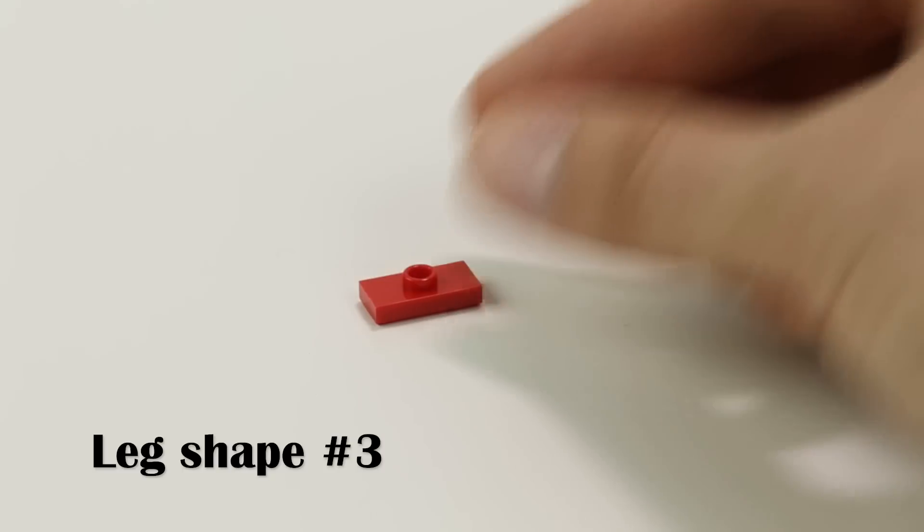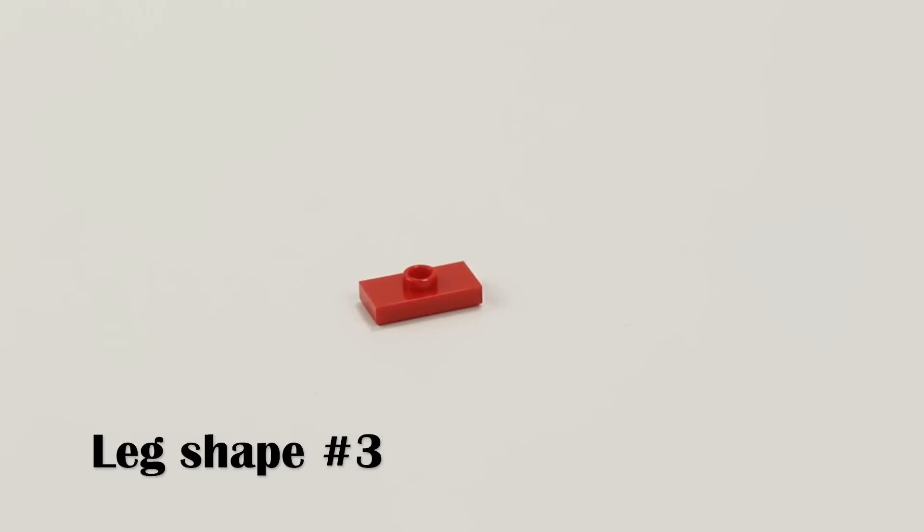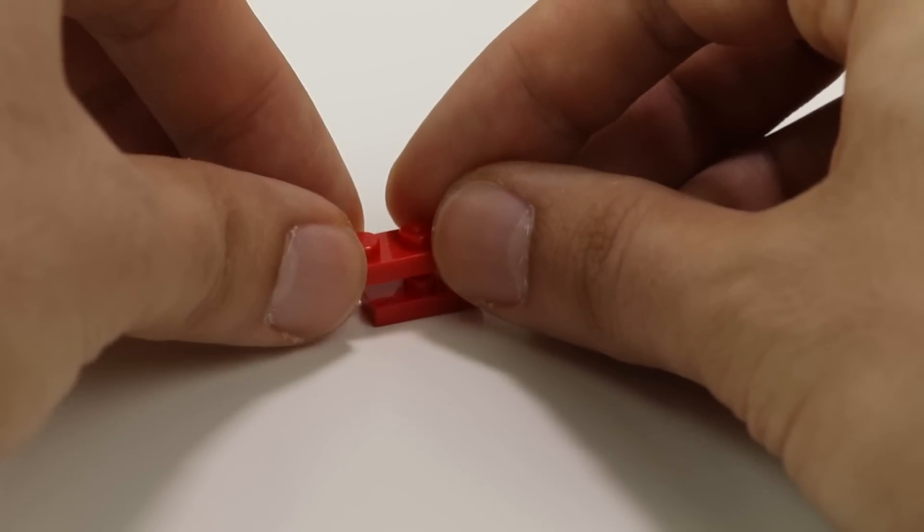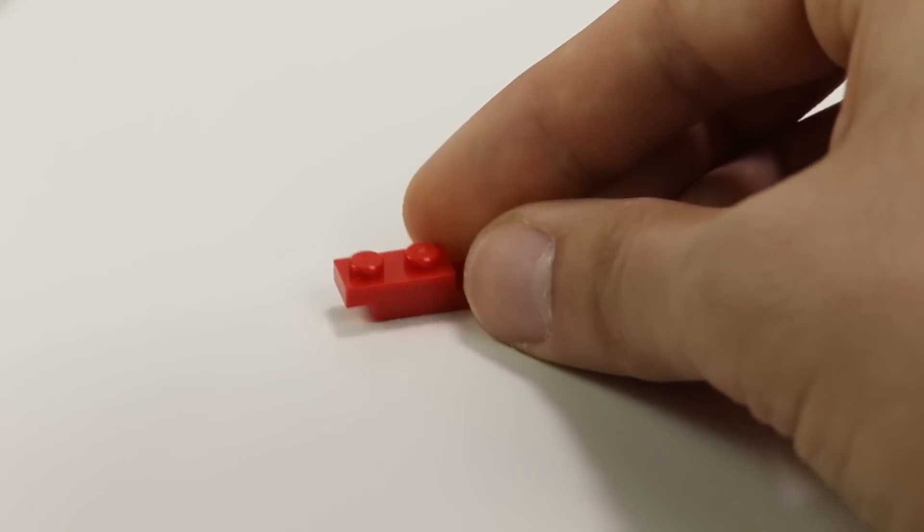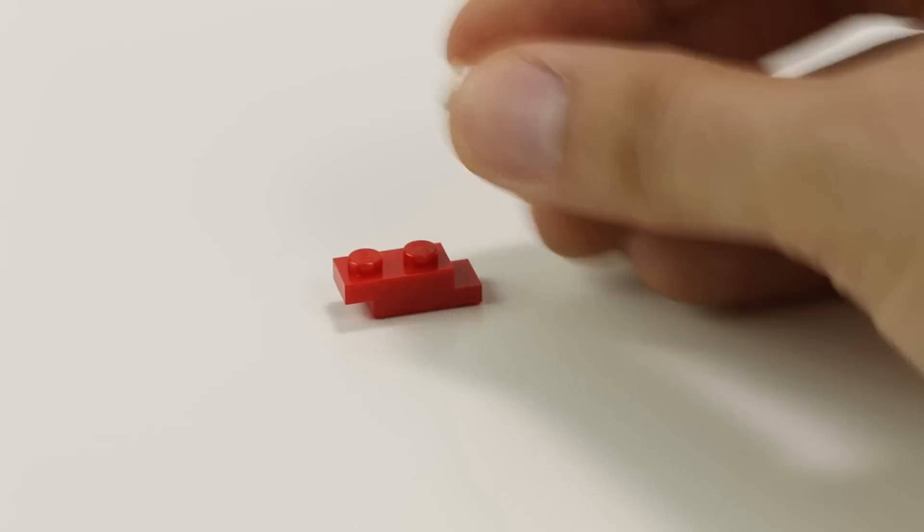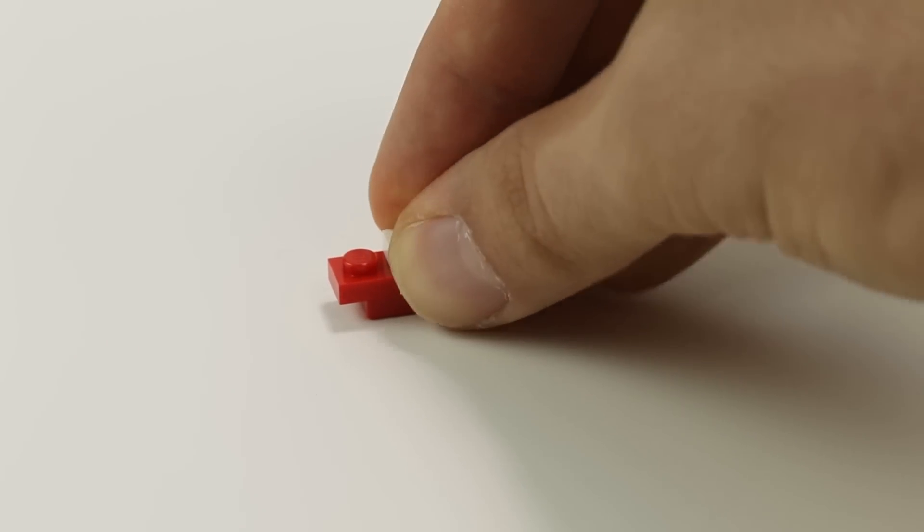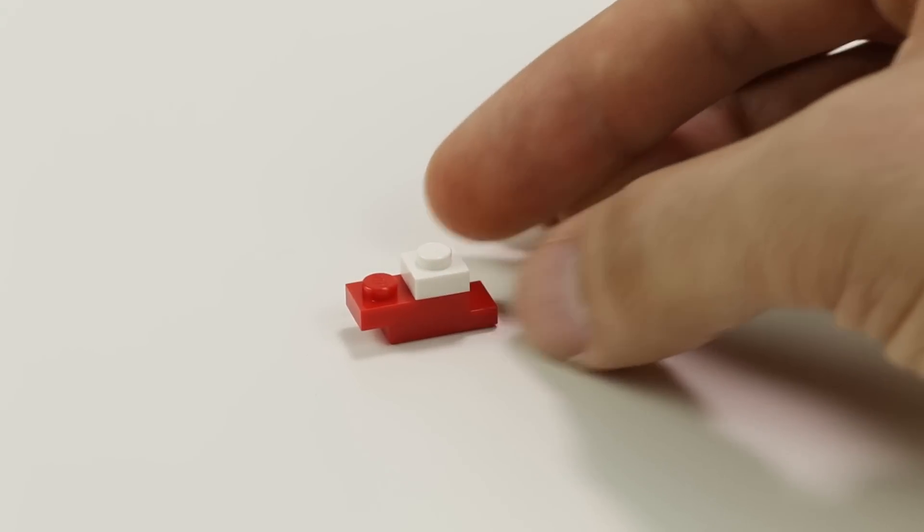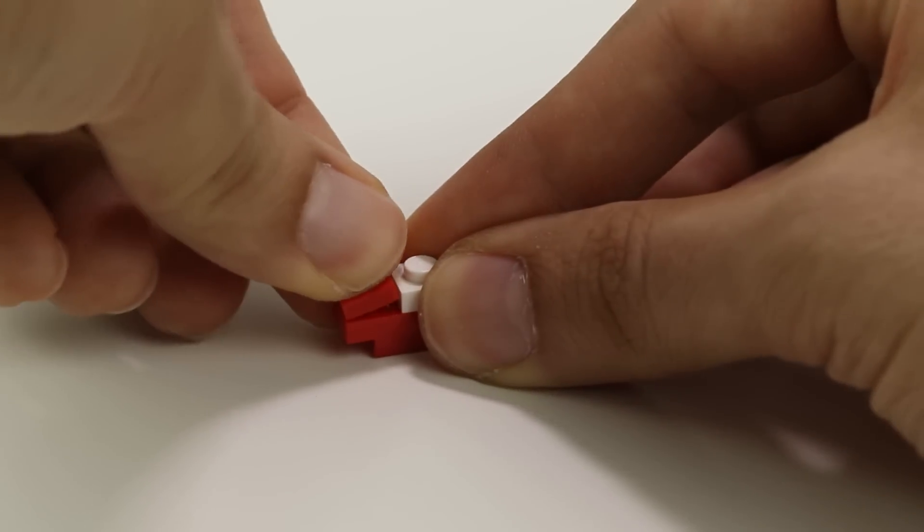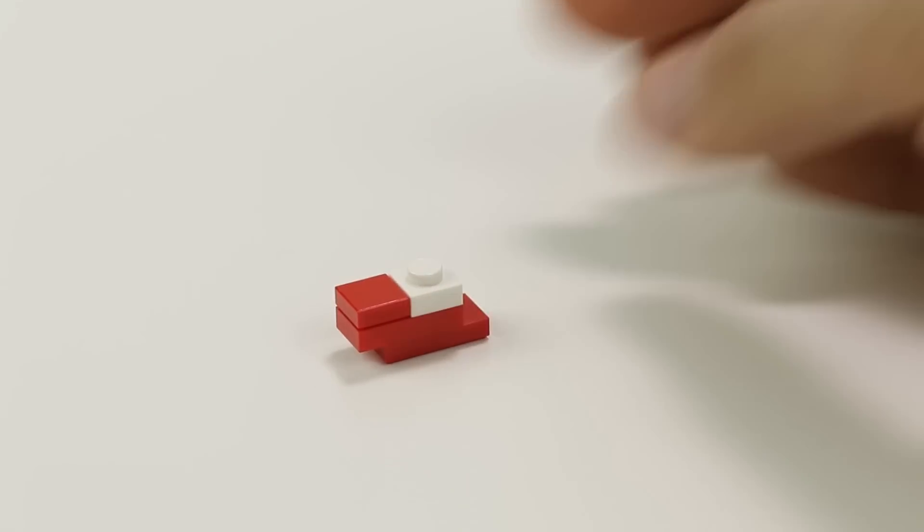Moving on to leg shape number three, we're going to start again with a 1x2 offset plate in red. Because this is a mirror image of leg shape number one, we're going to build the same kind of feet, but we're going to put them on the opposite sides. So left will become right, right will become left. We've added a 1x2 red plate and a 1x1 white plate on top of that, and then this 1x1 red tile. So that's one of the feet.